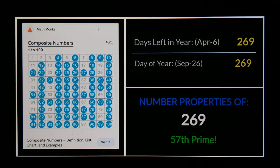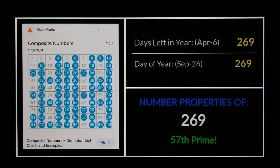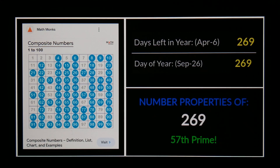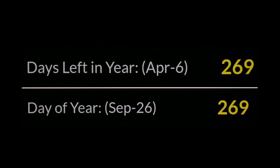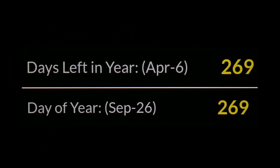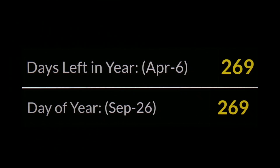Again, the 57th prime number is 269. It's worth pointing out that September 26th — the 269th day of the year — can typically be written in most parts of the world as 26/9, like the number 269. But now we can look at a leap year.